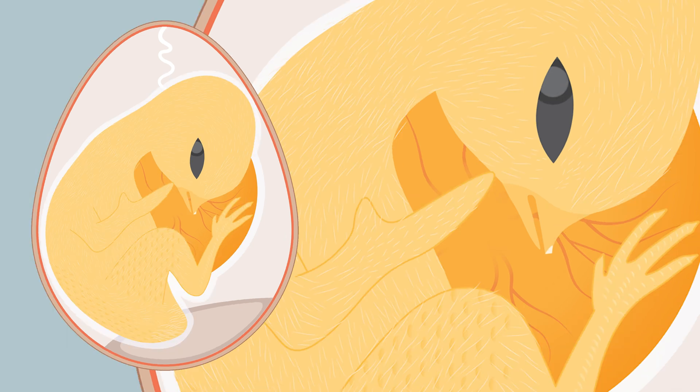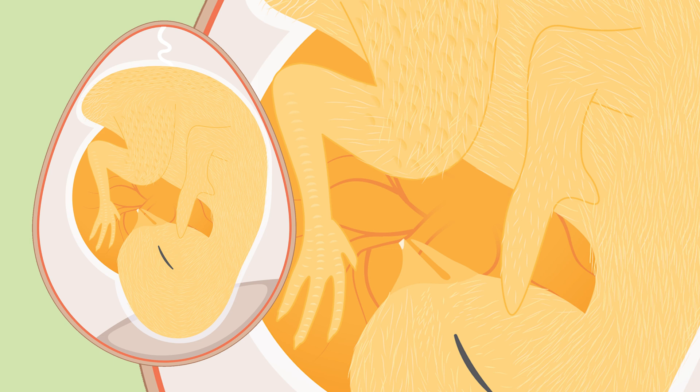Day 13: appearance of scales, body covered lightly with feathers. Day 14: embryo turns head towards large end of egg.